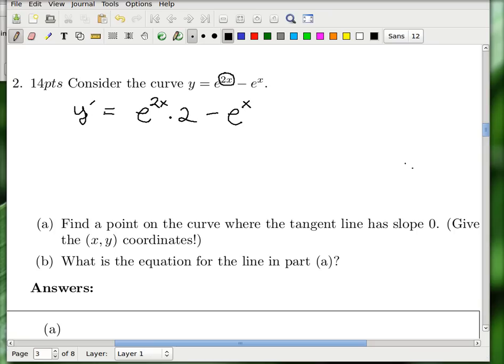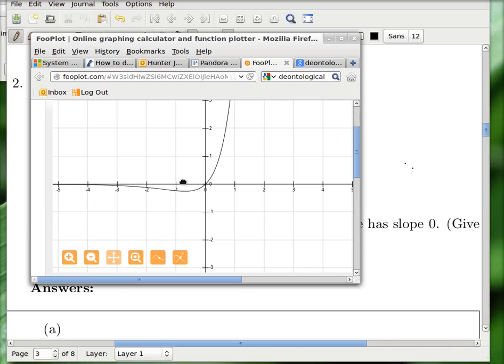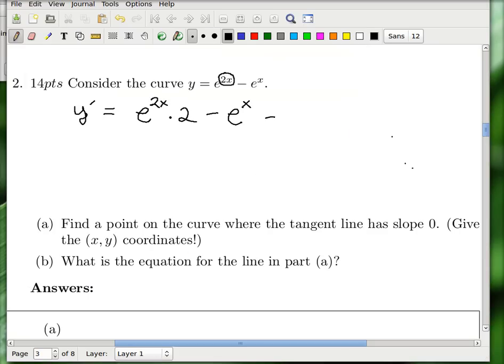And so remember what the derivative means. If you put in a value for x here, what will come out is the slope of the tangent line of the curve at that x value. So one way we can find what this point is is to set this equal to 0 and solve for x, so let's do that.